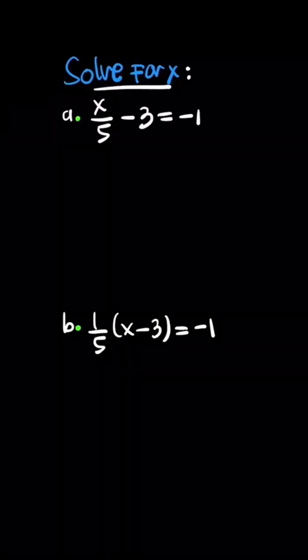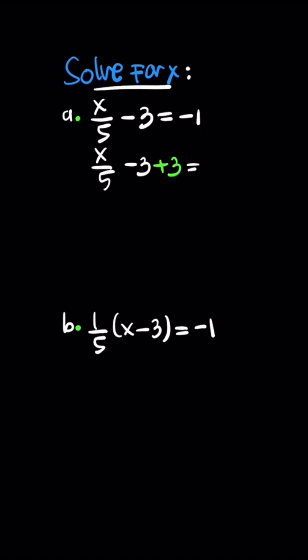Let's solve these questions. x/5 - 3 = -1. This is a linear equation, so we can solve this by removing -3 on the left side. x/5 - 3, I'm going to add 3, equals -1. You do the same on the right side. Then this just cancels, so x/5 equals 2.